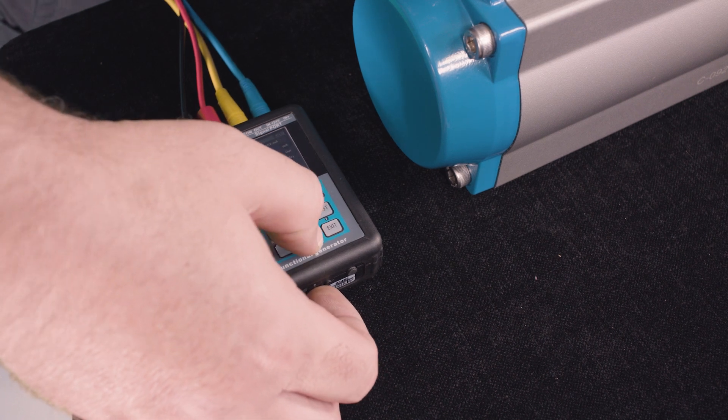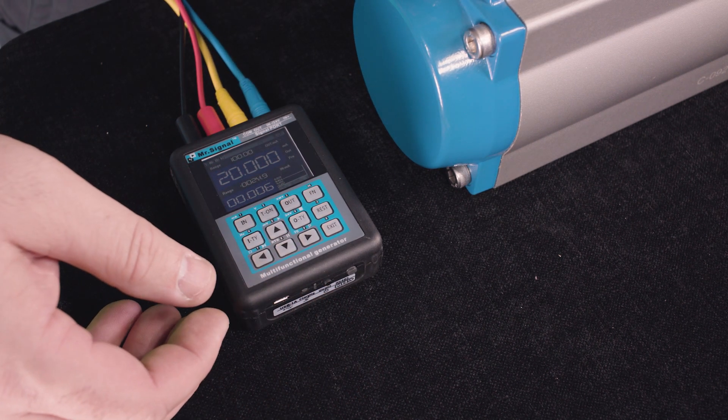Next, apply 20 milliamps to the positioner. The valve should move toward open.